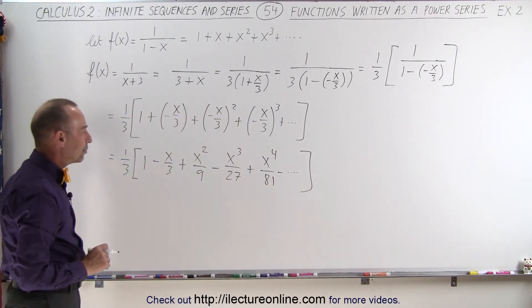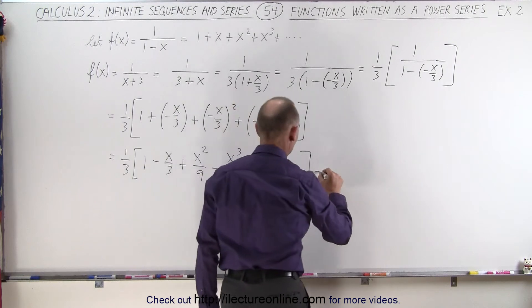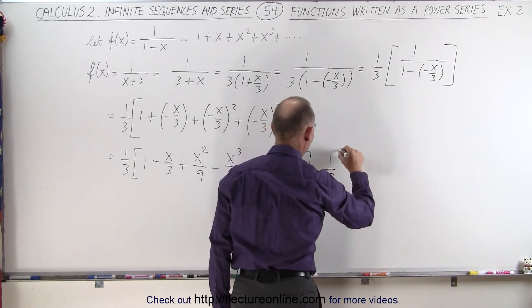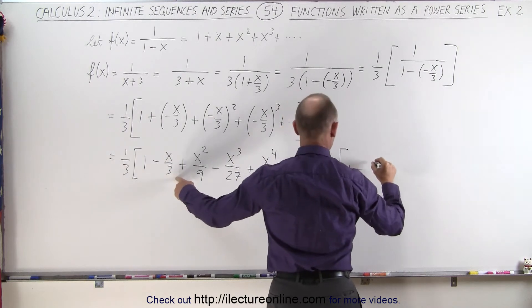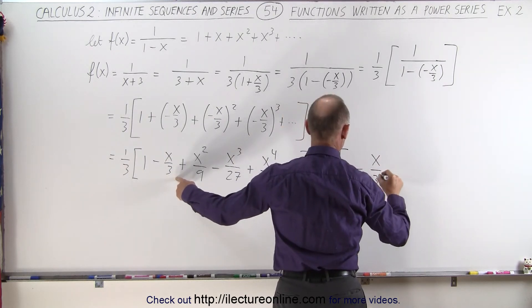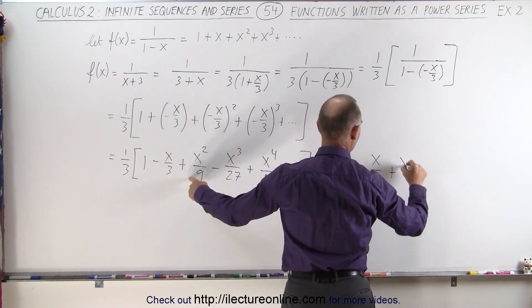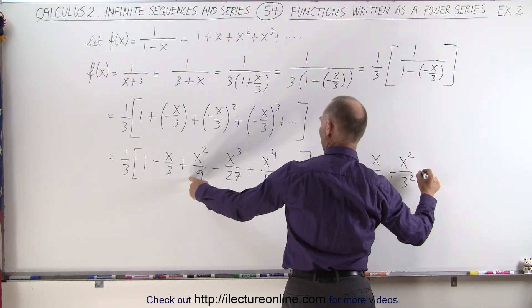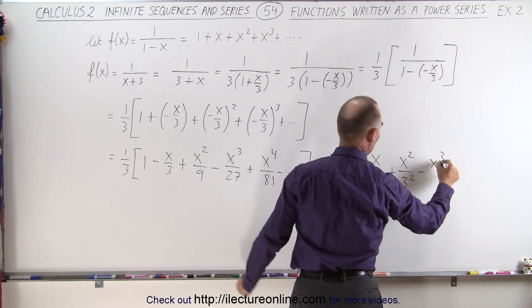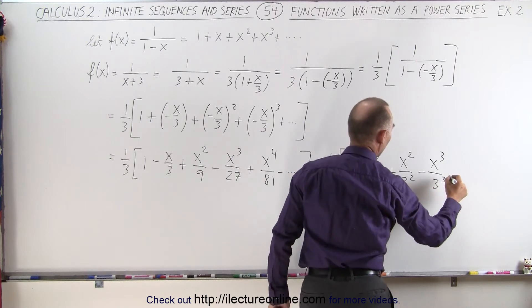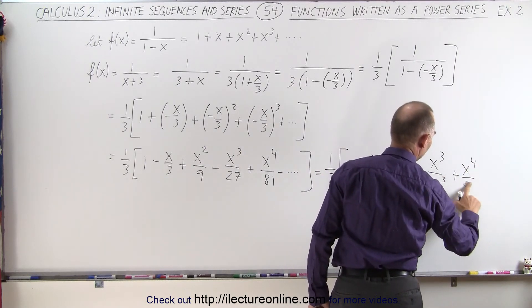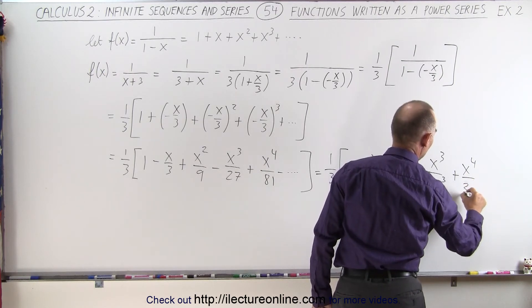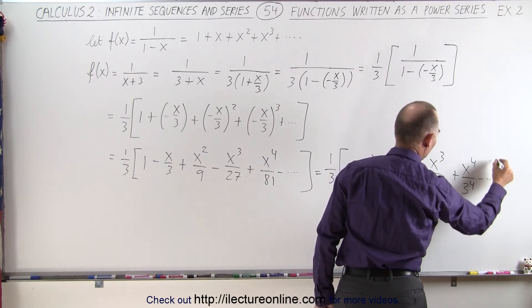Then I think what we can do is write as follows. This is equal to 1 over 3 times, we have 1 minus x over 3 to the first power, plus x squared over 3 squared, minus x cubed over 3 cubed, plus x to the fourth over, not 4, but 3 to the fourth, minus, and so forth.